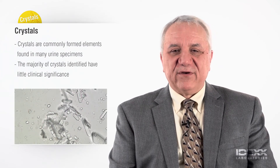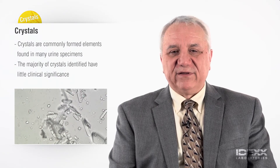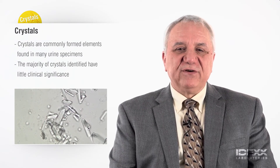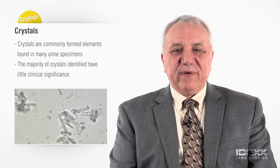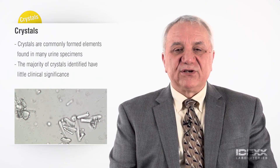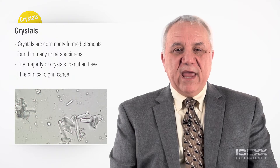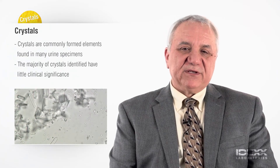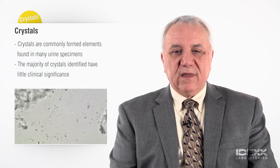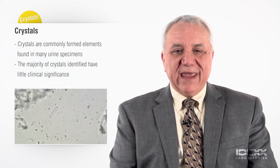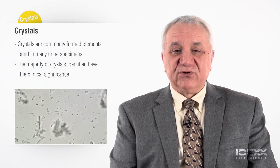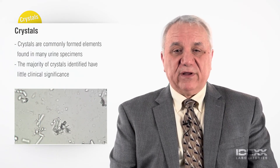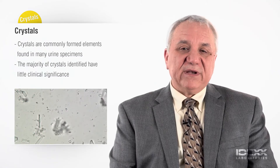A third important formed element of the urine specimen is the crystal. Crystals are commonly formed elements found in many urine specimens, but the majority of the crystals identified have little clinical significance. The formation of crystals is dependent upon several physical factors, including pH, temperature, concentration of the urine itself, and the solubility of the components in the urine. In general, the more cool a urine specimen is, the greater the number of crystals will be found. Refrigerated urine specimens may have many more crystals than freshly collected warm urine. The identification of the type of crystal present may aid in the detection of underlying disorders predisposing an animal to uroliths, help predict the composition of the uroliths that are known to be present, and potentially help monitor therapy instituted to dissolve uroliths that have been identified.